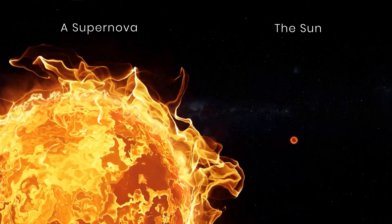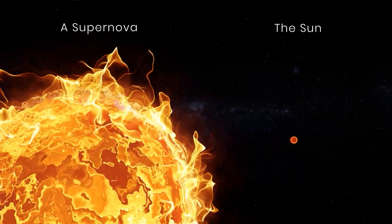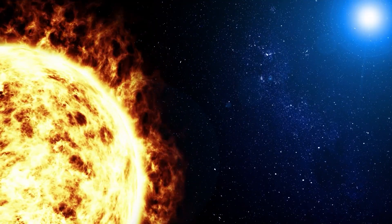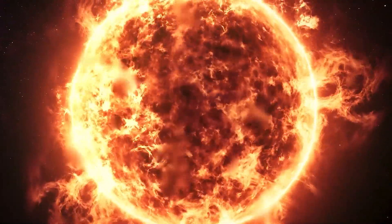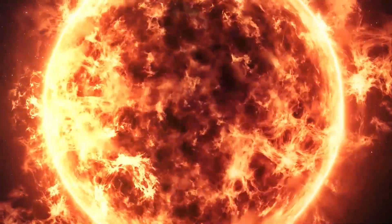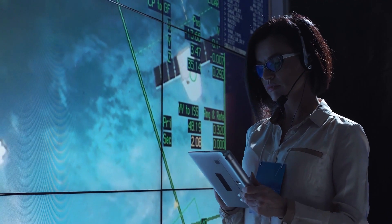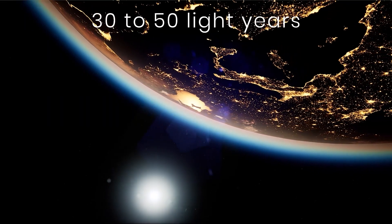Fortunately, our Sun is far too small and doesn't have enough mass to go supernova. But let's consider the explosion of a star besides our Sun, one that is close enough to create some big problems here on Earth. Astronomers say that a star within 30 to 50 light-years away could be devastating to the planet.